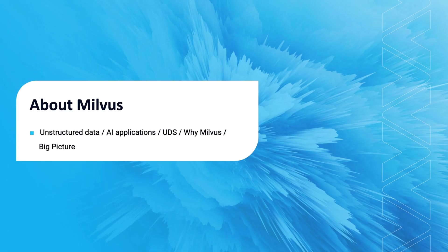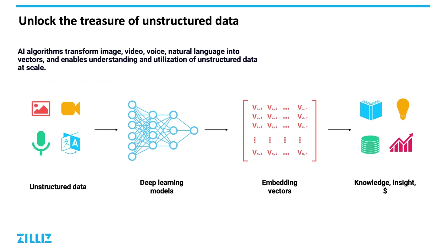So let's talk about Milvus. We generally divide data into three categories: structured data, semi-structured data, and unstructured data. Structured data includes things such as numbers, dates, and strings — things that have definite structure and can easily be compared to each other.